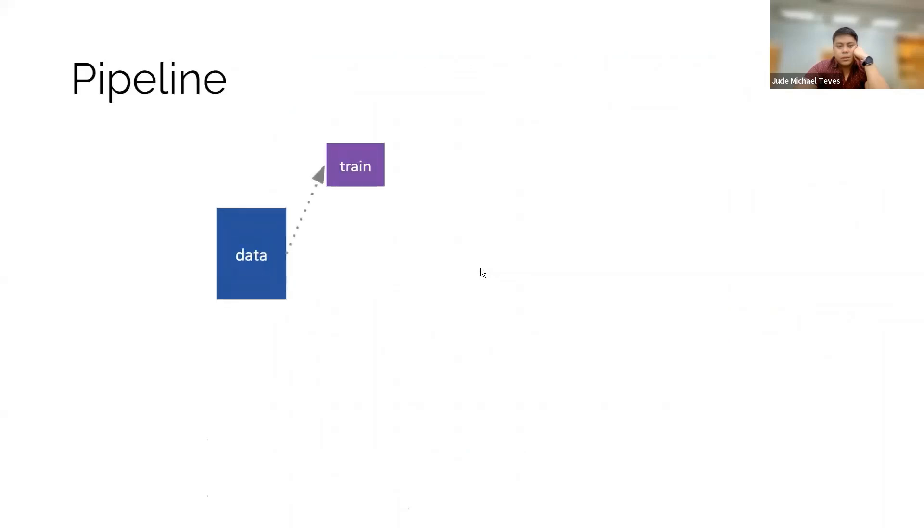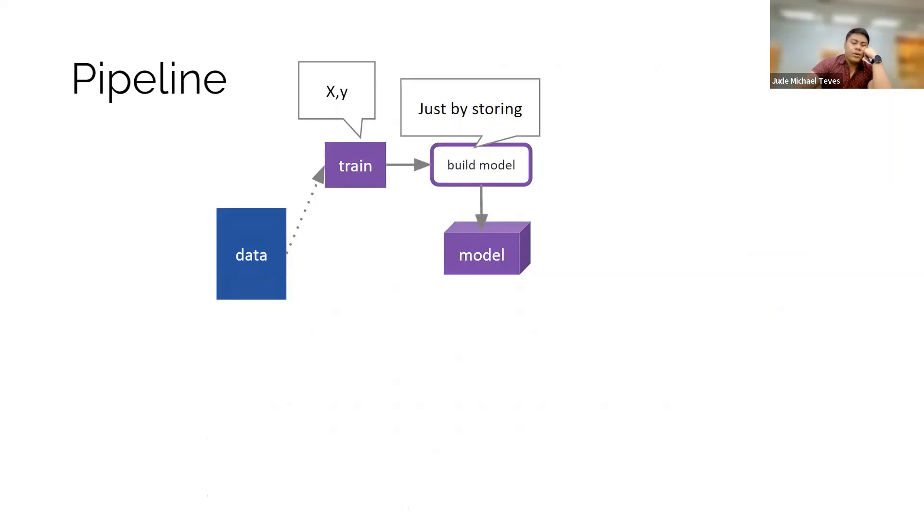Pipeline. So you have your data, train. Train is just storing all the data points, the model, just by storing in the case of KNN. But for other models, it's more complicated than that.